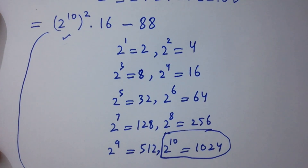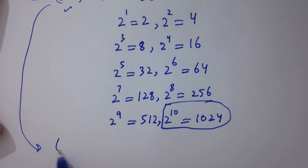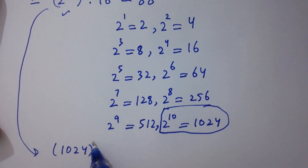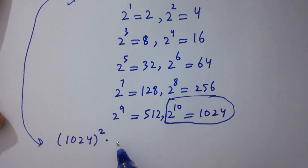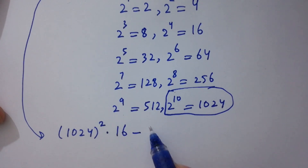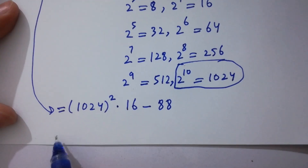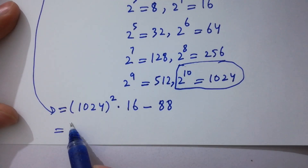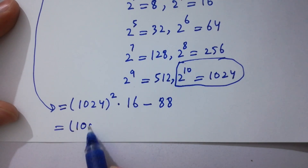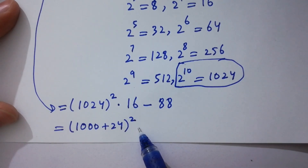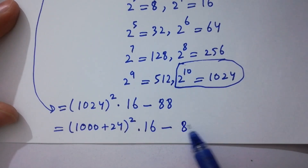So 2 to the power 10 is equal to 1024. It will be equal to 1024, which means (2¹⁰)² is (1024)². Times 16 minus 88. Here 1024 can be written as 1000 plus 24 to the whole power 2, times 16, minus 88.